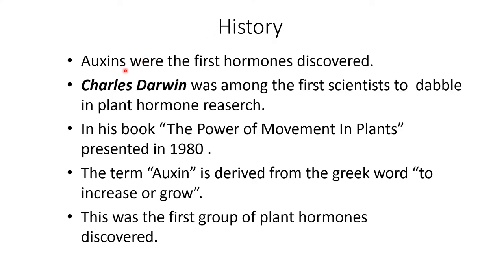History of auxin. Charles Darwin was among the first scientists to dabble in plant hormone research. In his book, The Power of Movement, he mentioned about plant hormones, presented in the year 1880. The term auxin was derived from the Greek word meaning to increase or to grow. This was the first group of plant hormones discovered.